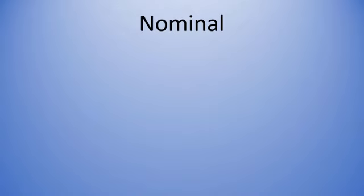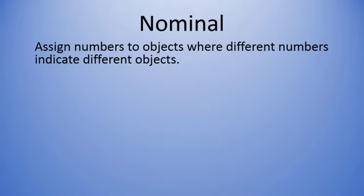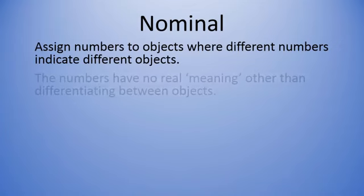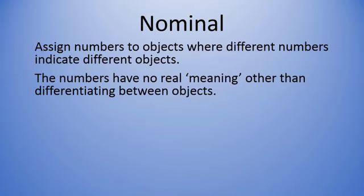First, we'll take a look at nominal. In a nominal scale of measurement, we assign numbers to objects where different numbers indicate different objects. The numbers have no real meaning other than differentiating between objects.